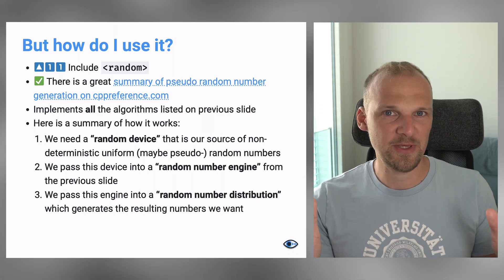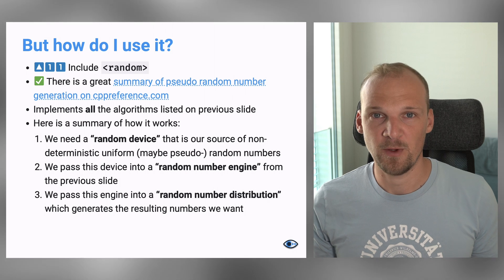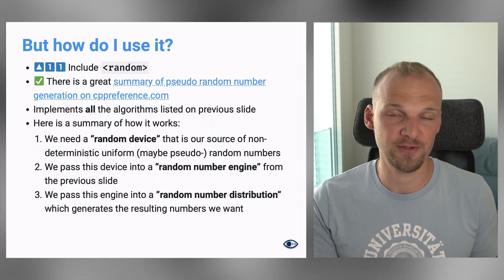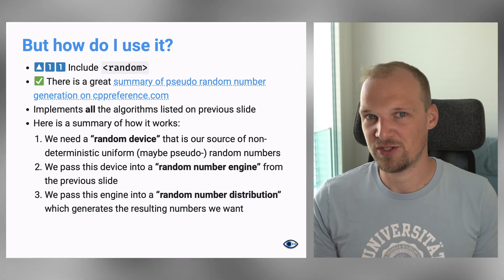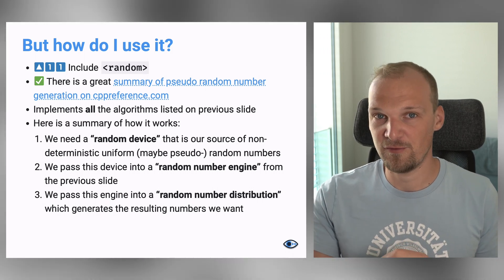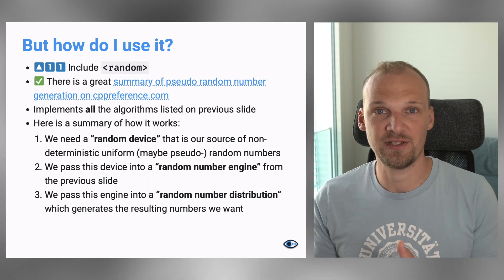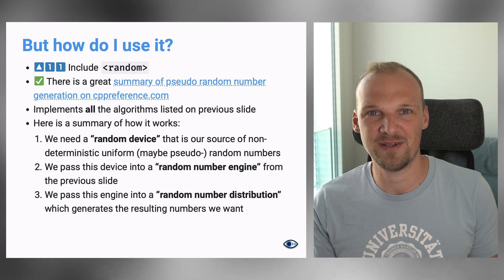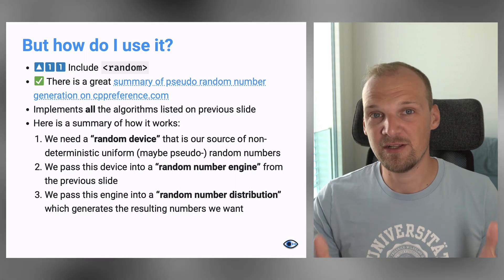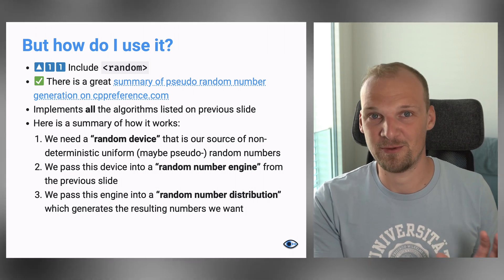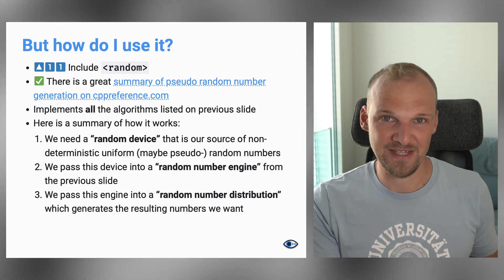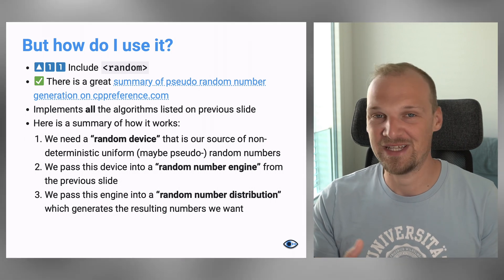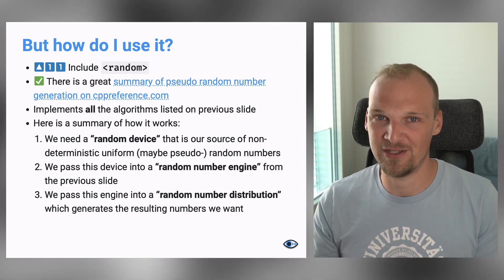Now, generally speaking, it works this way. We need three things. We need the random device, which can generate random or pseudo random numbers. It's actually implementation defined. Sometimes if your hardware supports this, it can actually generate the actual random numbers or what is called actual random numbers. But it can also use the pseudorandom generator algorithms that we discussed before for that device. And that device basically just needs to generate some random integers.